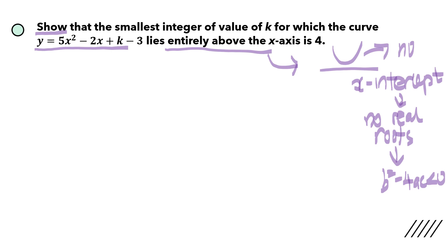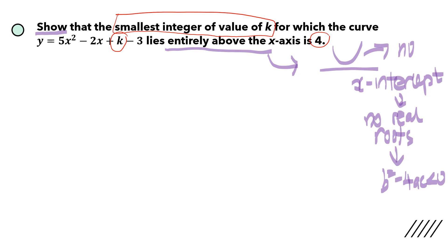The question involves an unknown variable k. k can be any value — 1, 2, 4, negative 7, anything. But for this particular curve to lie entirely above the x-axis, the smallest integer value of k is 4, and we need to prove that. Our job is to prove that the smallest integer value of k is 4 for the curve to be entirely above the x-axis. We prove it by using b squared minus 4ac less than zero.